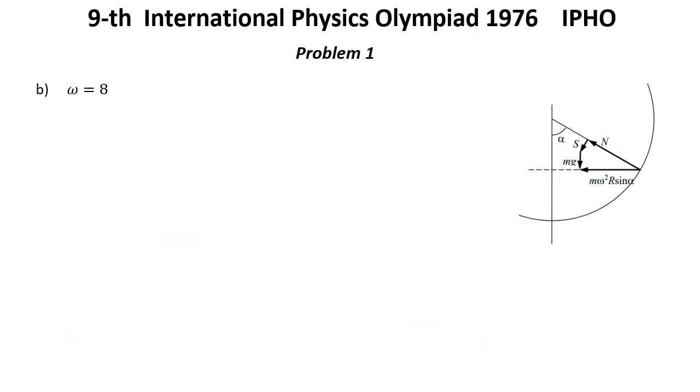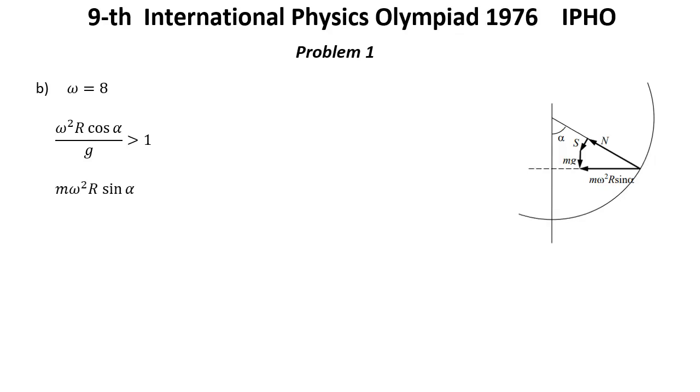Question B. Now suppose that omega equal 8 radians per second. If on the other hand we have omega square R cosine alpha over G greater than 1, some friction is necessary to prevent the block to slip upward. So it means that M omega square R sine alpha must be equal to resultant of forces S, N, and Mg.